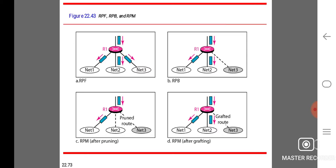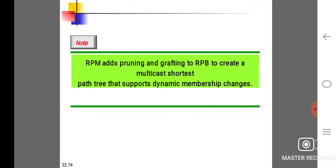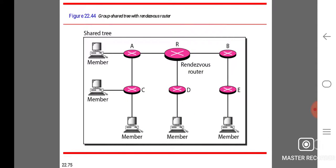This diagram shows A representing RPF, B representing RPB, C representing RPM, after pruning the RPM, and after grafting. RPM adds pruning and grafting to RPB to create a multicast shortest path tree that supports dynamic membership changes.